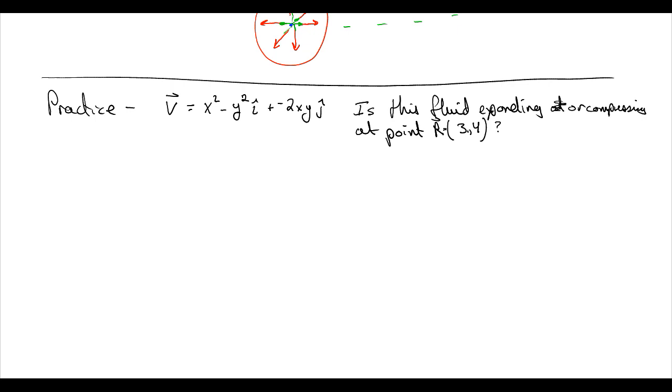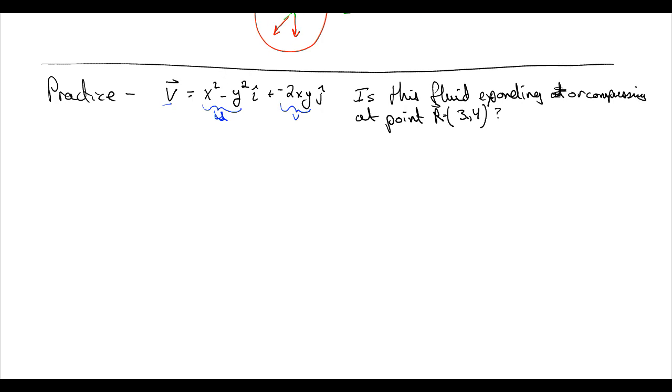All right, so let's practice this. We have our Eulerianly, our velocity described using Eulerian point of view. So here's our w and here's our v. So clearly we have a 2D flow here. Sorry, not w, u. u is a function of x and y, v is a function of 2xy. And now our question is, is the fluid expanding or compressing at the point r is equal to 3, 4.